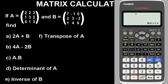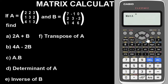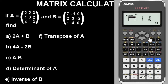Part A says we find two times matrix A plus matrix B. To do that, press option then select matrix A (option 3), then since we have a coefficient of 2, type 2 times matrix A, then press plus, go back to option 4 and select matrix B. Press equals to get the answer. This is the result for the addition of these two matrices.